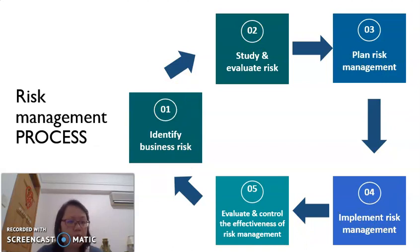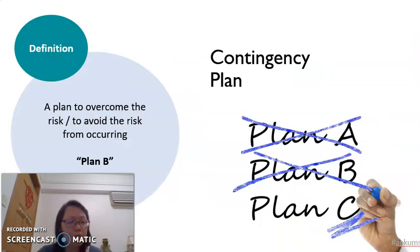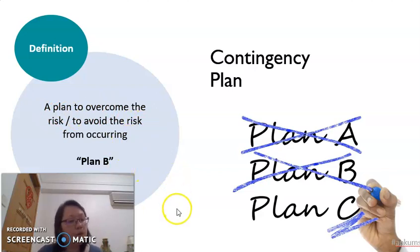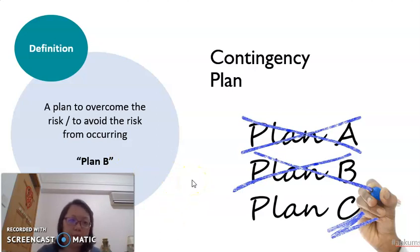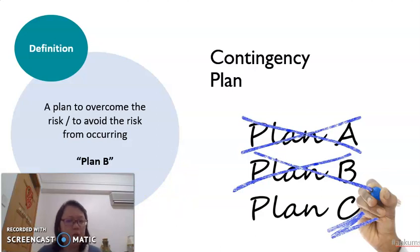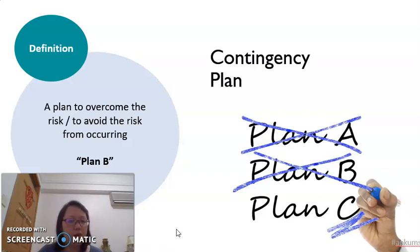When we do risk management, we also create a contingency plan — a plan to overcome or avoid the risk from occurring. In other words, this is sometimes called Plan B or even Plan C. Sometimes our original plan might not work, so we look for Plan B or Plan C. This is very common for businesses facing a changing, dynamic environment, so we must always have a contingency plan in mind.